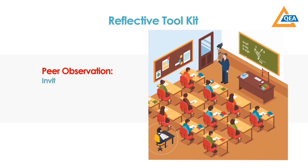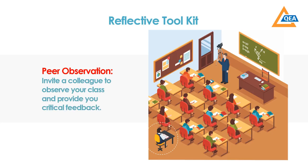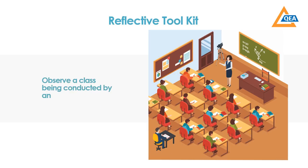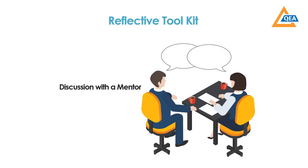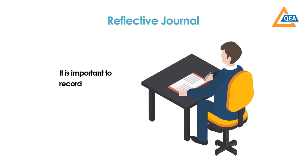One more way is to invite a colleague to observe your class. Assure your colleague that you are looking for critical feedback — the colleague may be able to tell a lot of things which we generally are not able to notice. Yet another way is observing the class of an experienced colleague, which would be a huge learning experience in terms of identifying best practices. You can also discuss your reflections with a mentor to get a way forward; the mentor will help you look deep into your problems and suggest workable solutions. Finally, do not forget to note down your reflections in a reflective journal, as it will help you in analyzing your progressive journey as a teacher.